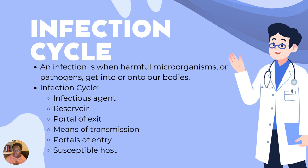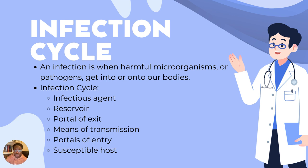Let's talk more about what an infection is. An infection is when a harmful microorganism or pathogen gets into or onto our bodies. These pathogens go through a cycle with six parts, including how they leave their homes, how they move, how they enter a new host, and more. This cycle is called the infection cycle. The six parts are: the infectious agent, reservoir, the portal of exit, the means of transmission, the portals of entry, and the susceptible host.